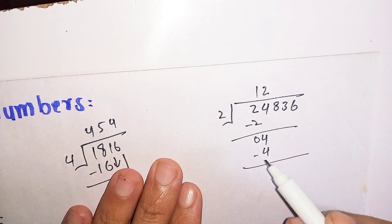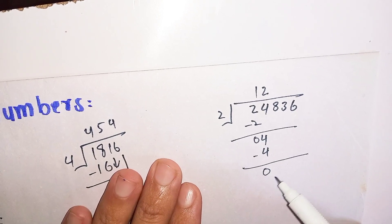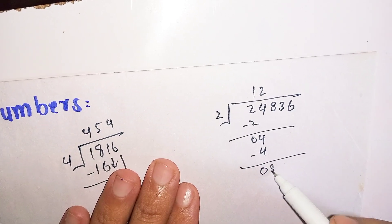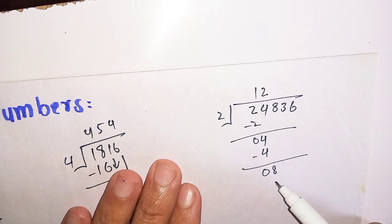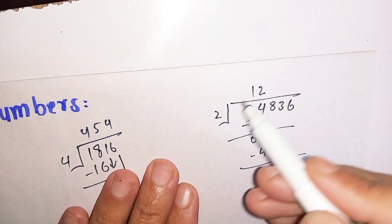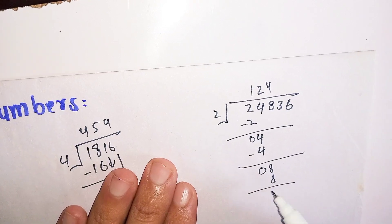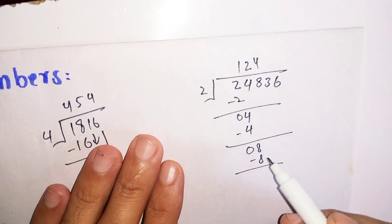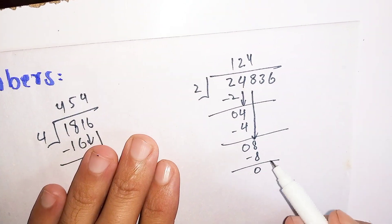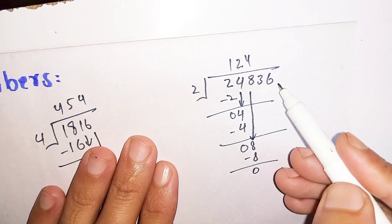Subtract 4 from 4, the remainder is 0. Now we will bring down the 8 near 0, which becomes 8. How many times does 2 go into 8? 2 times 4 is 8. Subtract 8 from 8, the remainder is 0. Now we see that 36 remains.